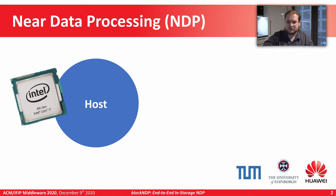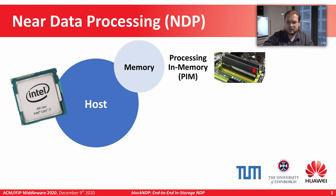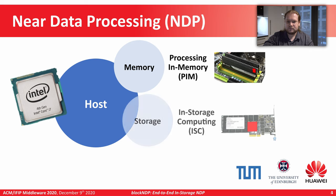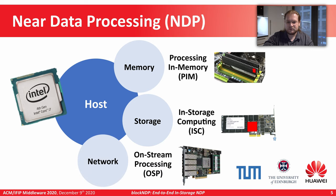There are three main branches of NDP. Processing in memory, where computation is performed in operating memory, for example in DRAM chips. In-storage computing, where computation is performed in persistent storage, typically in solid state drives. And on-stream processing, where computation is performed in connection fabrics, such as network interface cards. Our work presented in this talk focuses primarily on in-storage computing.